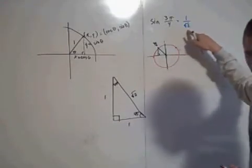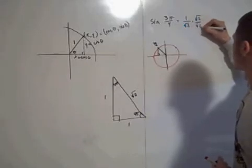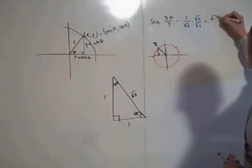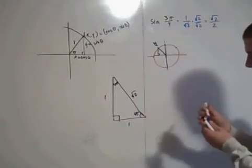And then we're going to rationalize this by multiplying the top and bottom by root 2. So I multiply by root 2 over root 2. So I have the square root of 2 over, well, root 2 times root 2, that's positive 2.